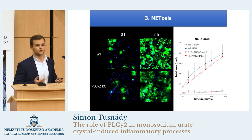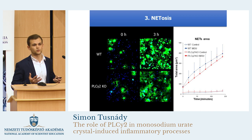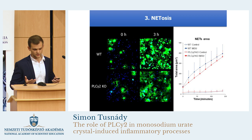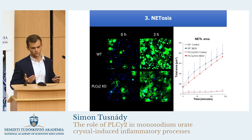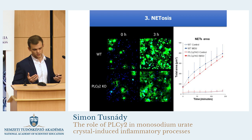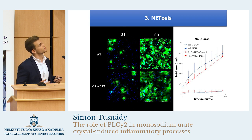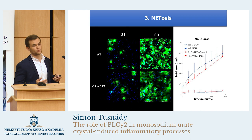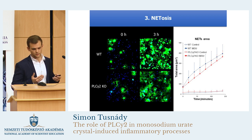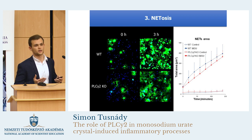After that, we would like to examine how this process changed in the PLC gamma 2-deficient neutrophils. And surprisingly, we found that despite the other two processes, the urate crystals could induce the process of NETosis also in the PLC gamma 2-deficient neutrophils. We found just a minimal difference between the two genotypes. To quantify these changes, we performed a computer analysis of the microscopic images. We examined the area of the formed NETs, and we found the same minimal difference between the two genotypes, but these differences were not significant in any cases.